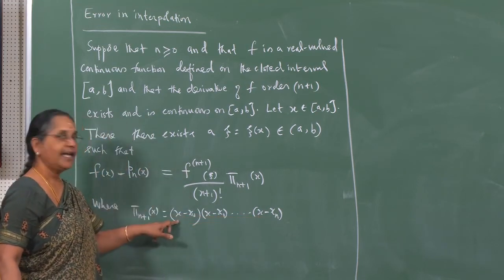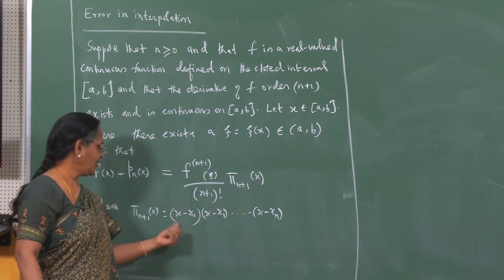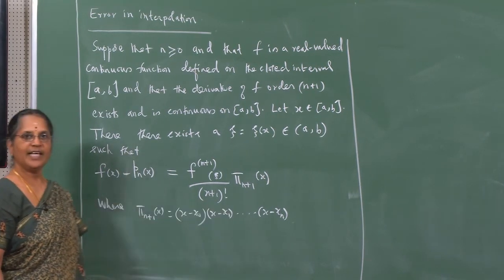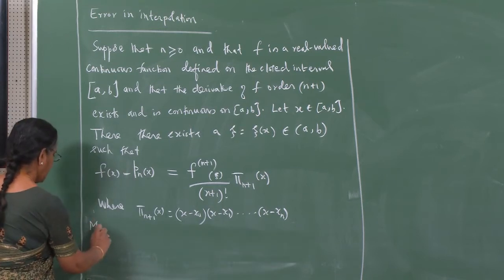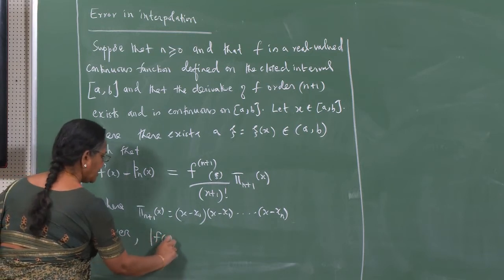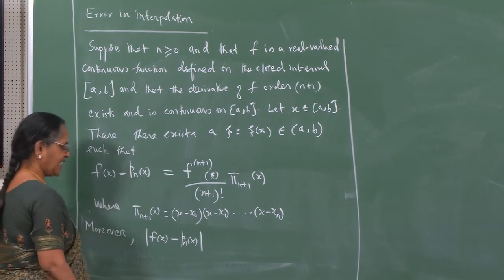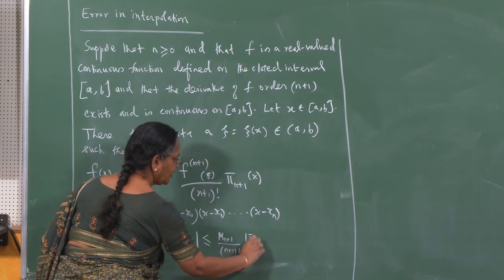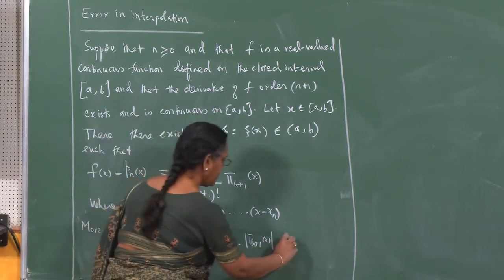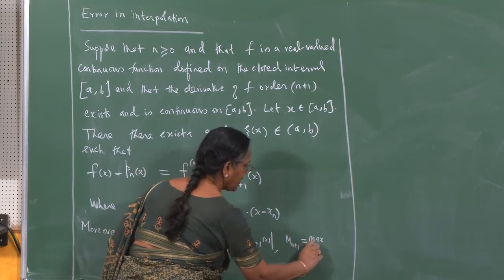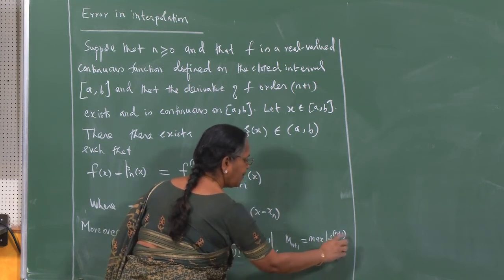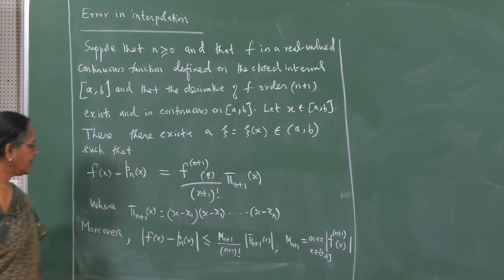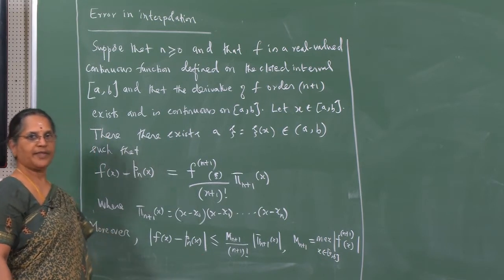This is a polynomial of degree n+1; there are n+1 such factors of the form (x − x₀), (x − x₁), and so on up to (x − xₙ). So π_{n+1}(x) is a polynomial of degree n+1. Moreover, we will show that |f(x) − p_n(x)| ≤ M_{n+1} / (n+1)! · |π_{n+1}(x)|, where M_{n+1} is the maximum of |f^(n+1)(x)| for x in [a, b]. This gives the error bound on the interpolation error.